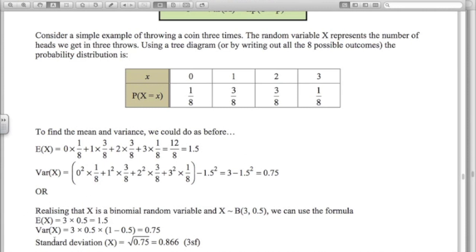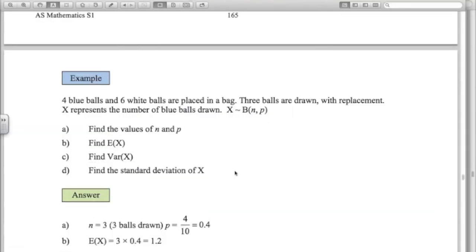Two quick examples. We've got four blue balls and six white balls in a bag. We're going to draw three balls at random and with replacement, so the binomial distribution works fine here because we're replacing the balls each time, so the probability would remain constant.